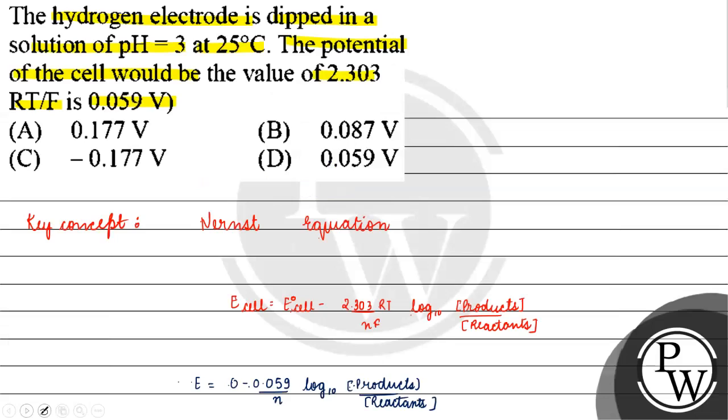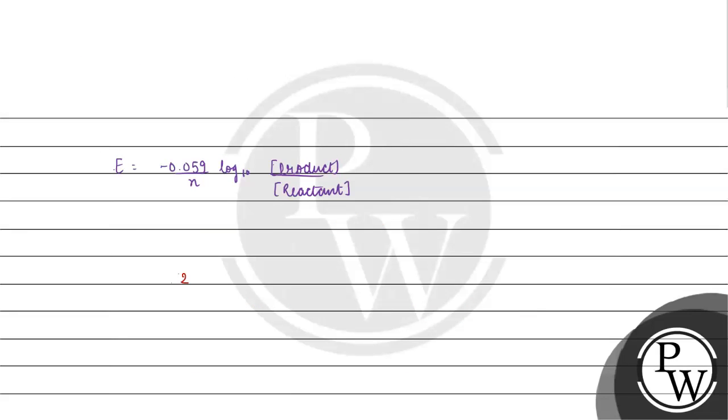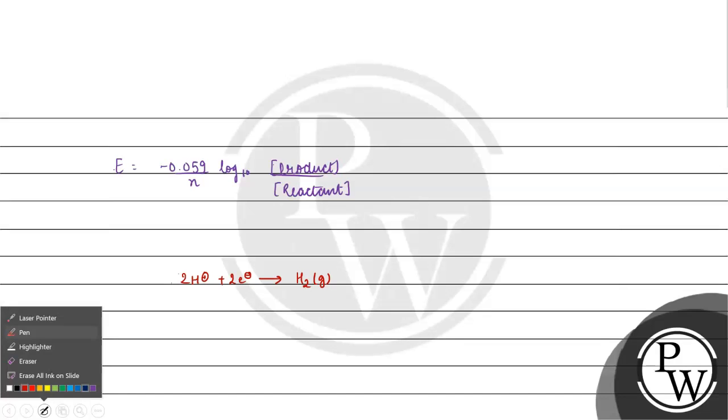So what will happen? 2H plus plus 2 electrons gives us hydrogen gas. So, if we talk about E.